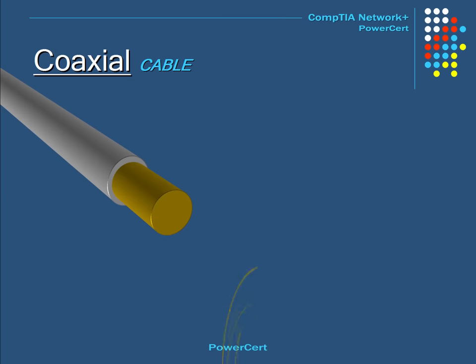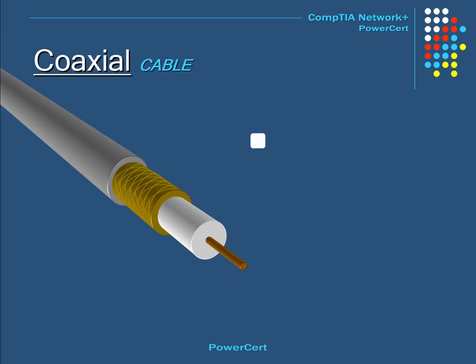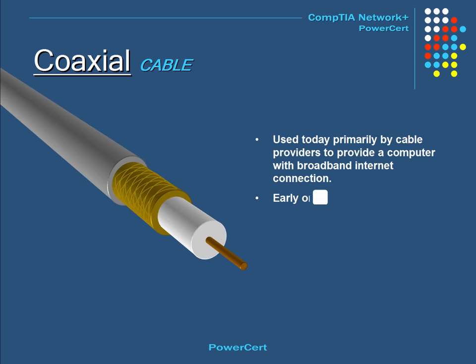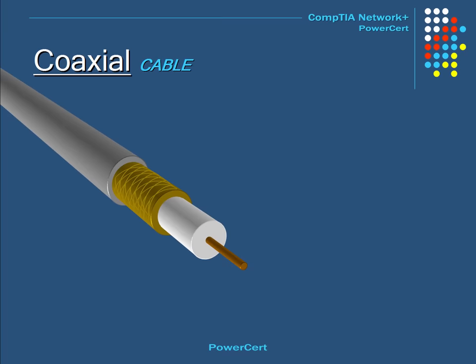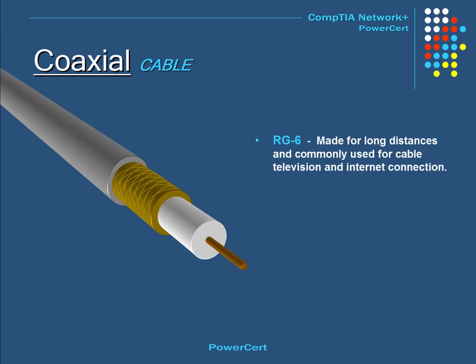This is a coaxial cable, used today primarily by cable providers to provide broadband internet connection. Early on it was used as a backbone for networks such as a bus network. There are two common types of coaxial cable. The first type is RG6, made for long distances and commonly used for cable television and internet connection. The second type is RG59, made for short distances and commonly used for high definition and high quality video.